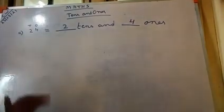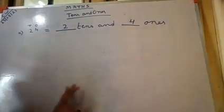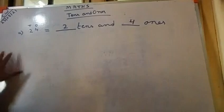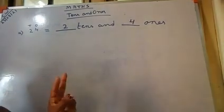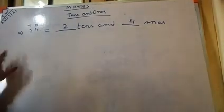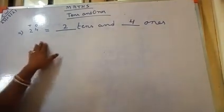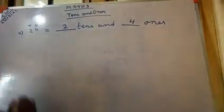Up to this, you have to know. Everybody knows that if there is a 2-digit number, one digit is in the tens place and one digit is in the ones place.